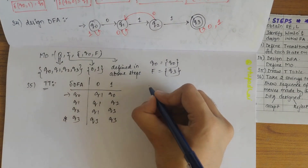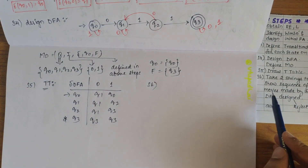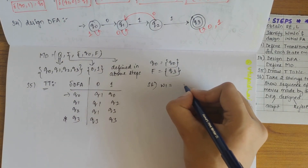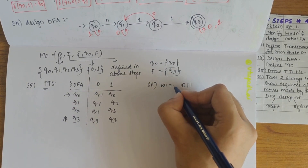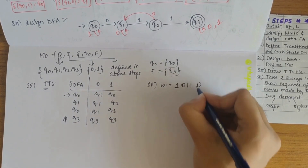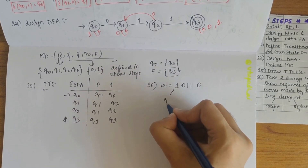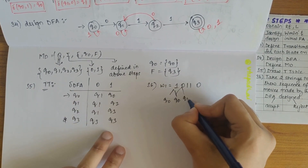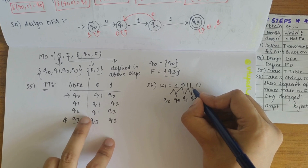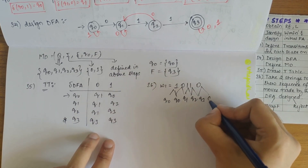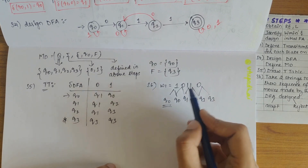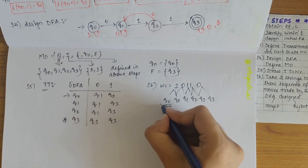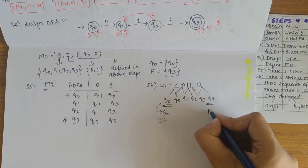Step 6 is to take two strings to show the sequence of moves made by the DFA — one accepted, one rejected. For the first string 10110: Q0 on 1 gives Q0, Q0 on 0 gives Q1, Q1 on 1 gives Q2, Q2 on 1 gives Q3, Q3 on 0 gives Q3. The start state is Q0 and the final state Q3 belongs to F, so this string is accepted.